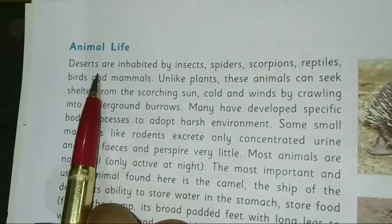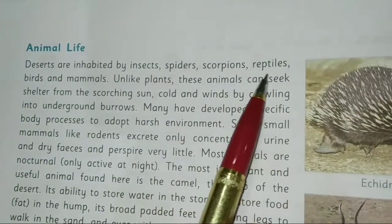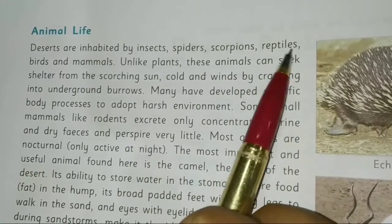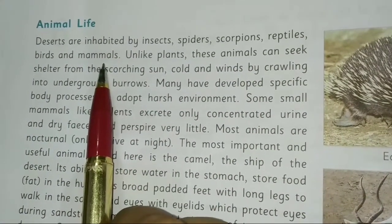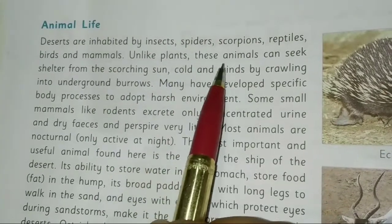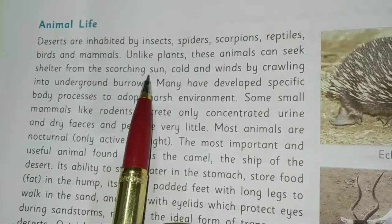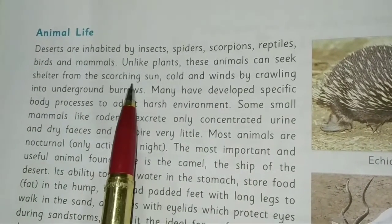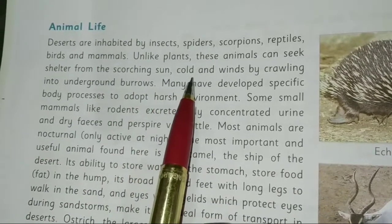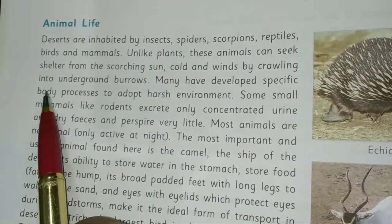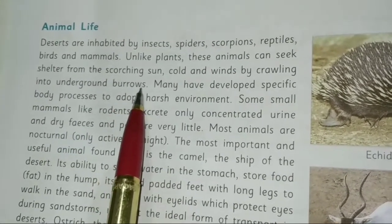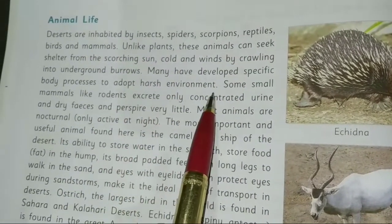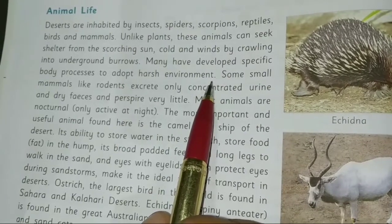Desert animal life is inhabited by insects, spiders, scorpions, reptiles, birds, and mammals. Unlike plants, these animals can seek shelter from the scorching sun by crawling into underground burrows. Many have developed specific body features and adaptations to survive in this harsh environment.